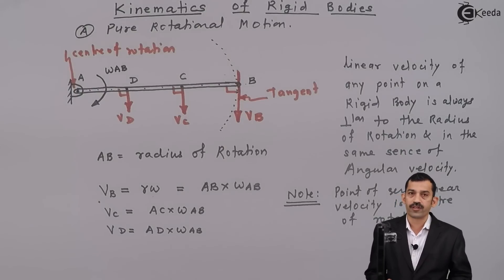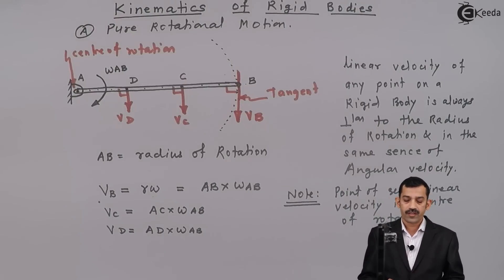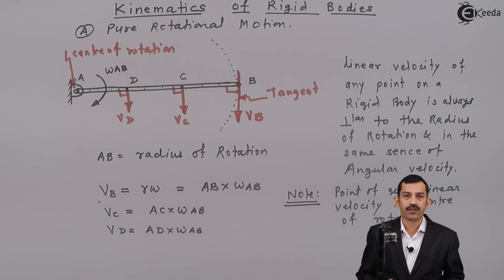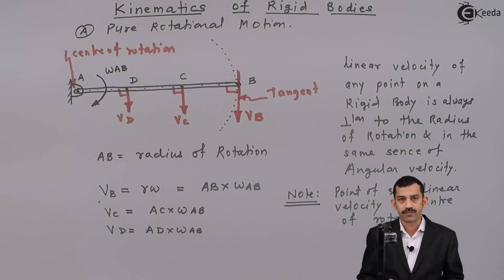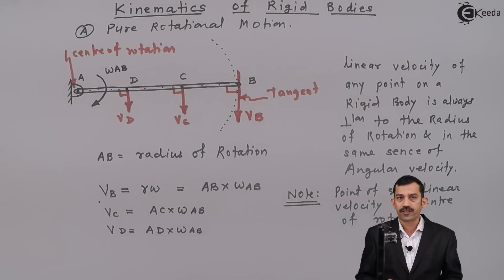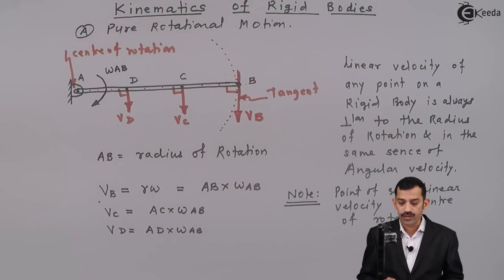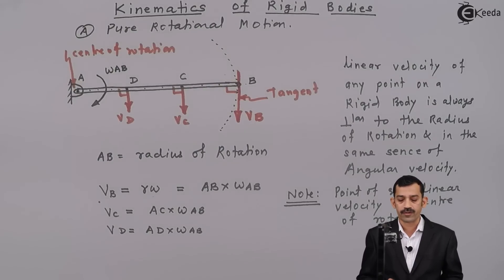What we have discussed is pure rotational motion. In pure rotational motion, the position of center of rotation remains fixed. The motion in which position of center of rotation remains fixed is called pure rotational motion. Linear velocity of any point is always perpendicular to radius of rotation and in the same sense of angular velocity. As linear velocity is perpendicular to radius of rotation, radius of rotation is perpendicular to linear velocity — one and the same thing. If you know the linear velocity of any point, the radius of rotation is perpendicular to it. This is simple pure rotational motion.